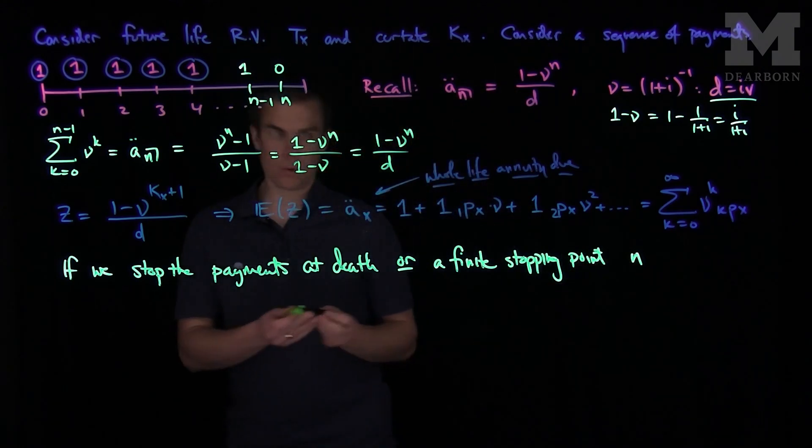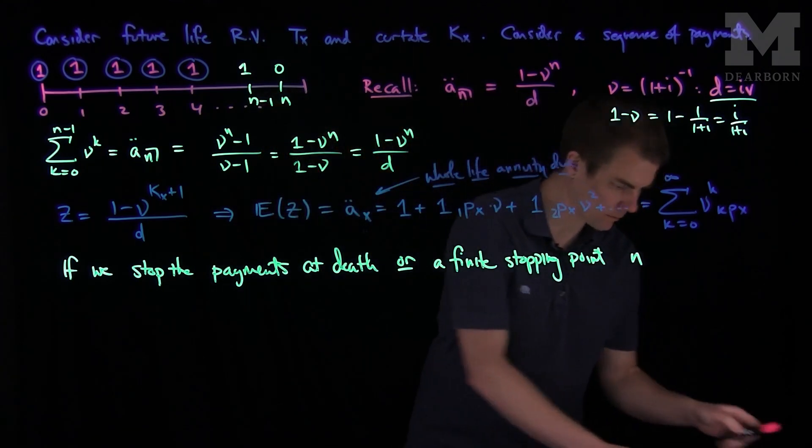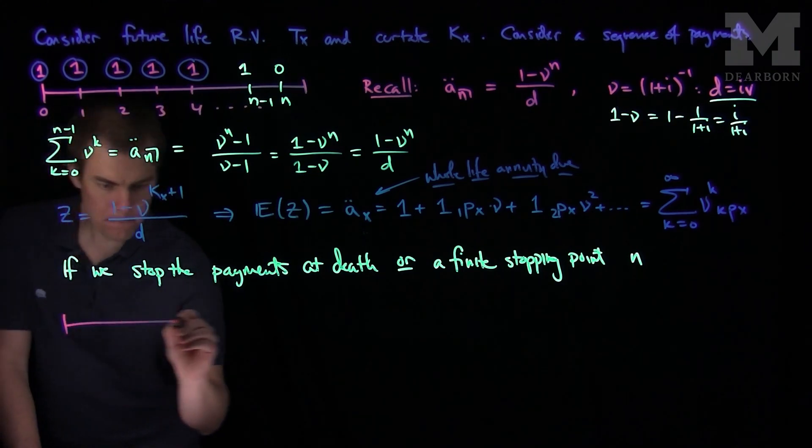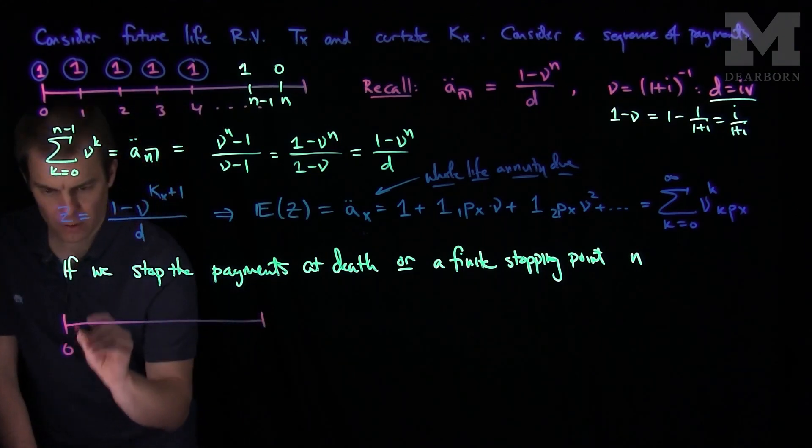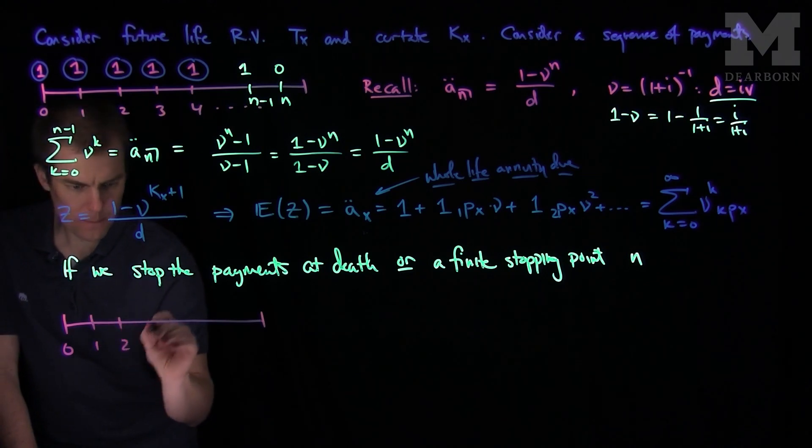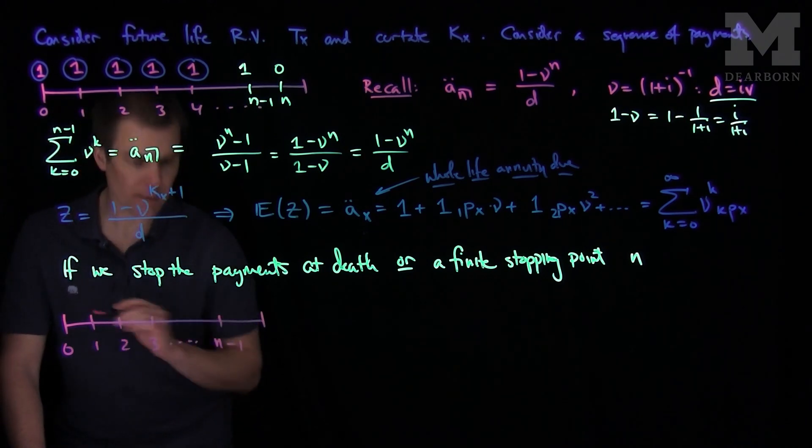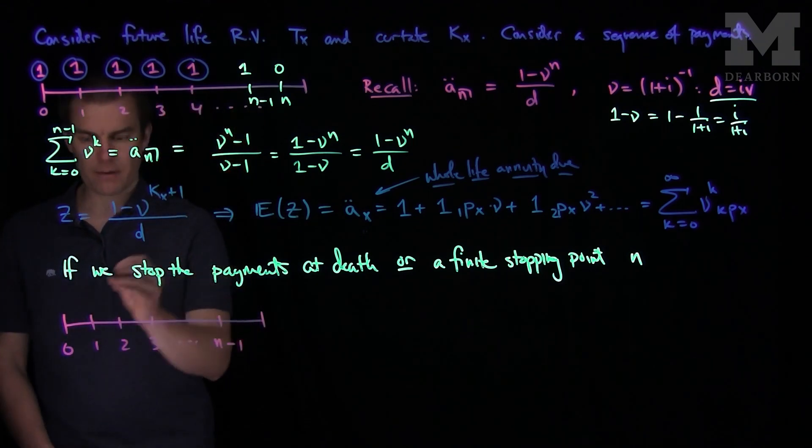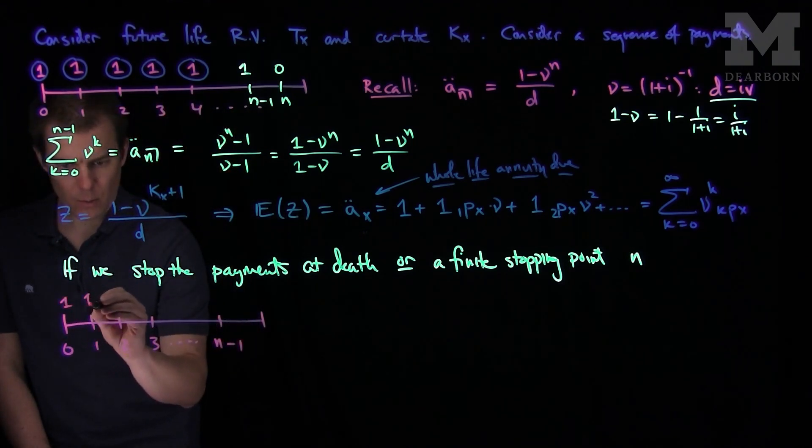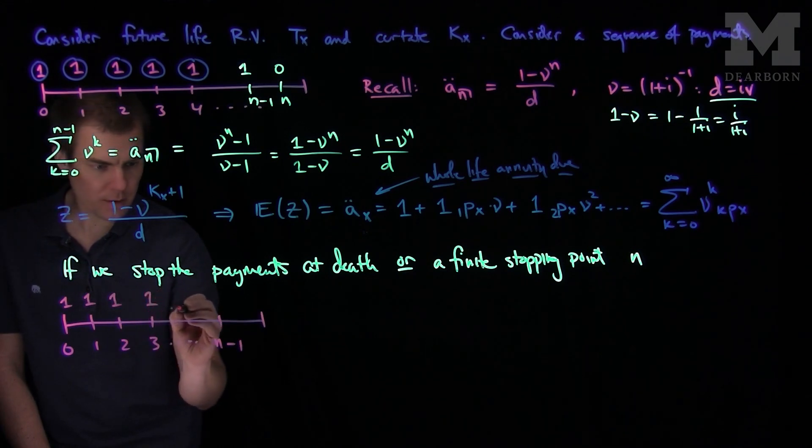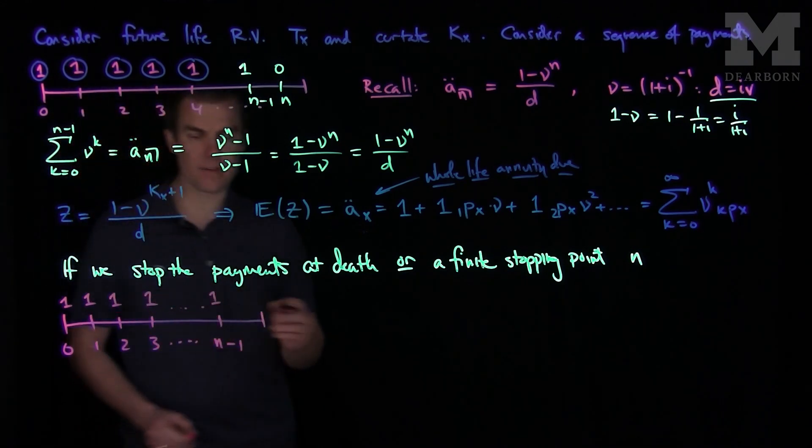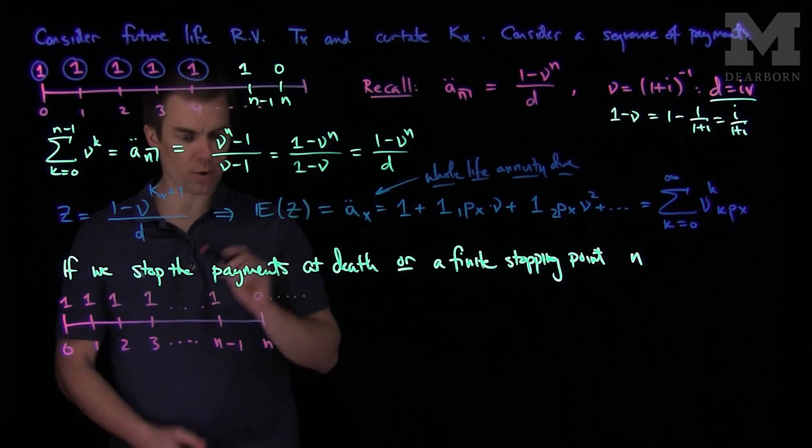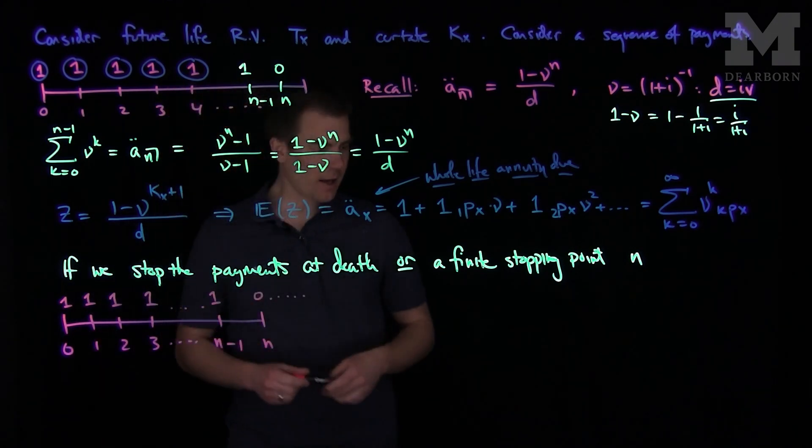We'll have 0, 1, 2, 3, n minus 1. And so what we'll get here is we'll have a 1, 1, 1, 1, 1 if you survive. And then after this point at time n, nothing happens after that point. If you survive to that point, you will just get your payments capped. And in this notation,